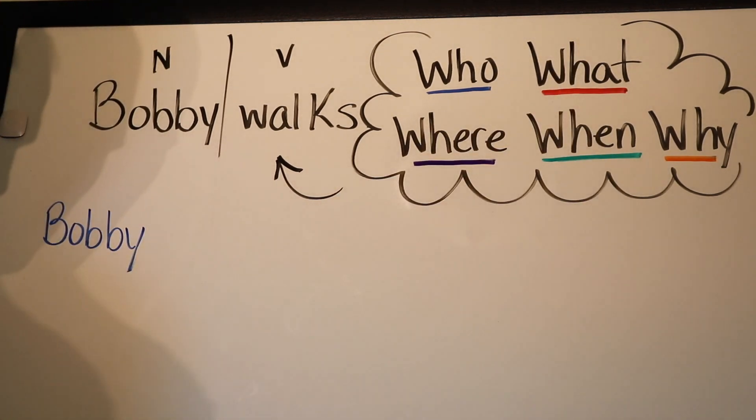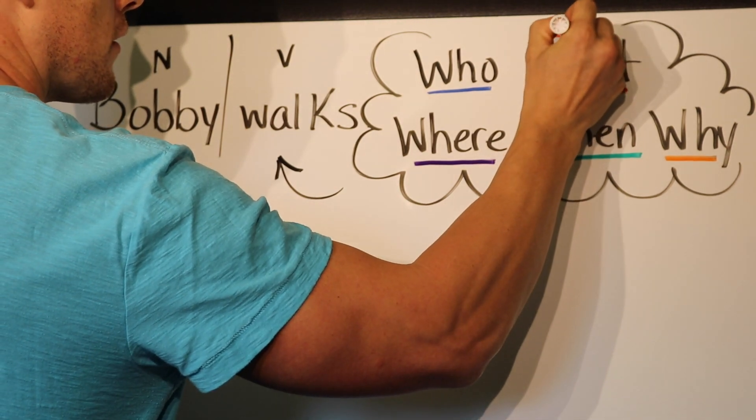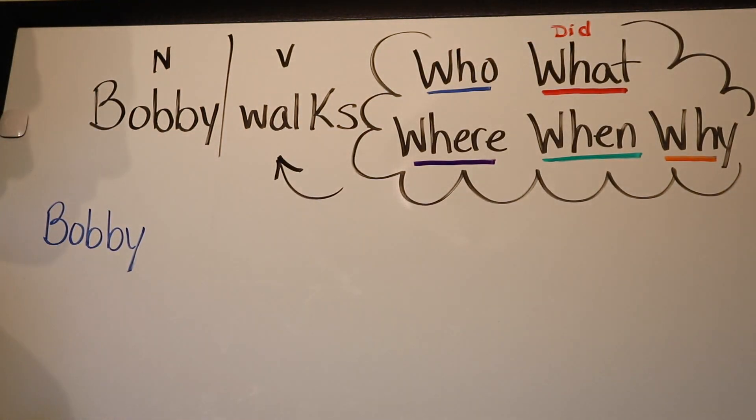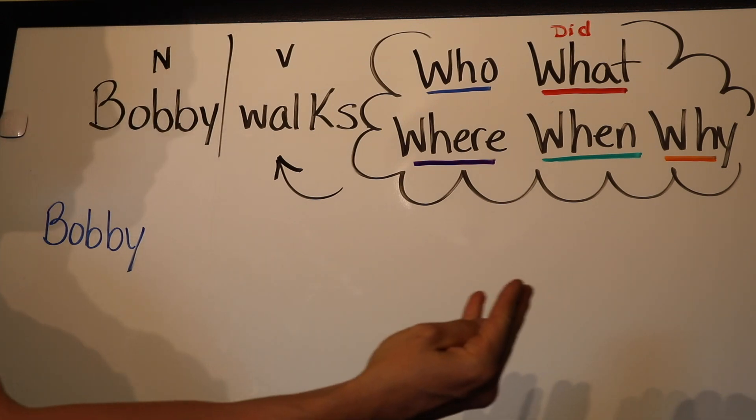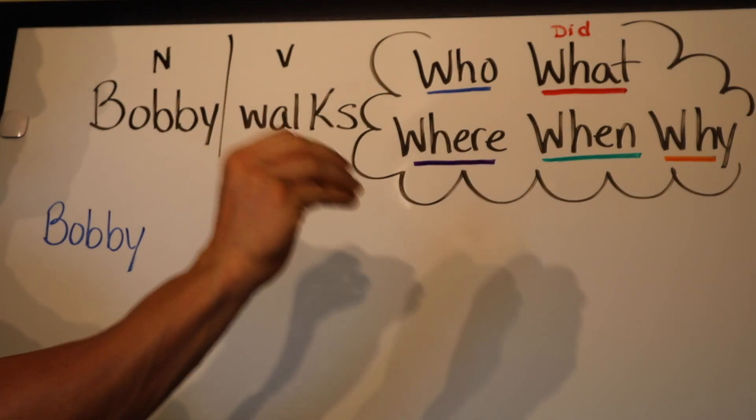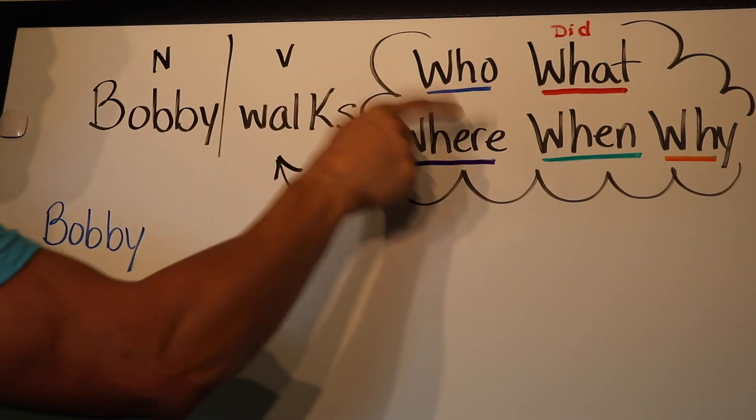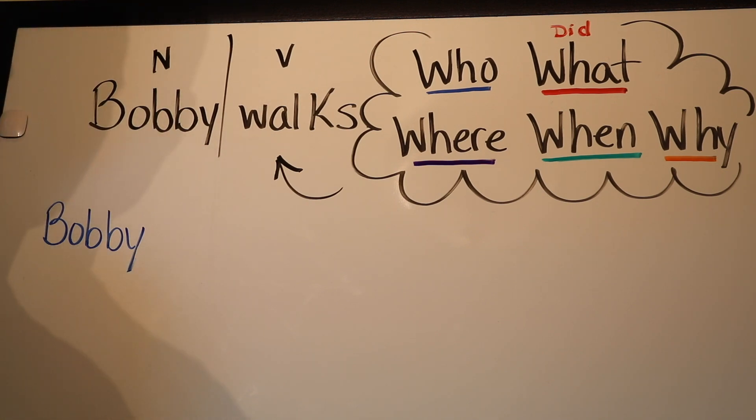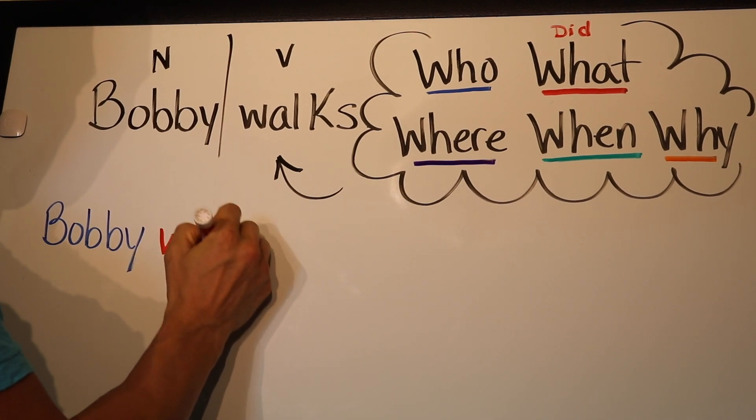Now for what, here's what I like to do with what. I like to ask myself this question: did what? So now we're talking about the verb or the action or what they're doing. We're not going to reach into being verbs yet, like is or was, we're just going to focus on action words, simplify the process, and really focus on expanding the sentence. So we have Bobby did what? Well, he walks. Bobby walks.